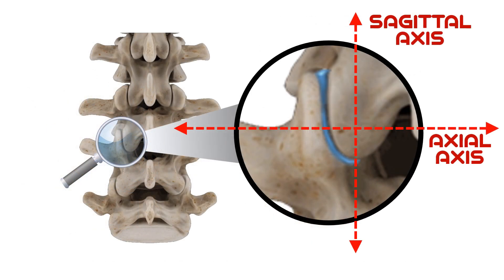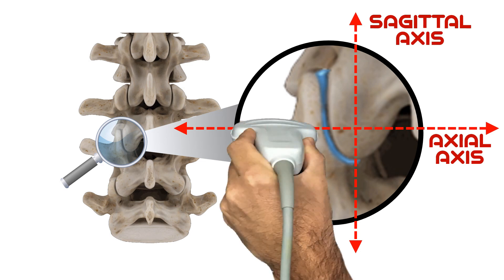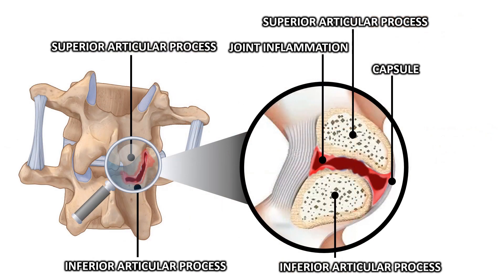The facet joints can be visualized using ultrasound in both sagittal and axial planes. However, due to the sagittal orientation of the structures in the lumbar region, the axial plane will provide the best sonographic view. Healthy facet joints support the spine whilst also allowing a wide range of twisting and bending. These joints may become inflamed and painful due to a variety of conditions.